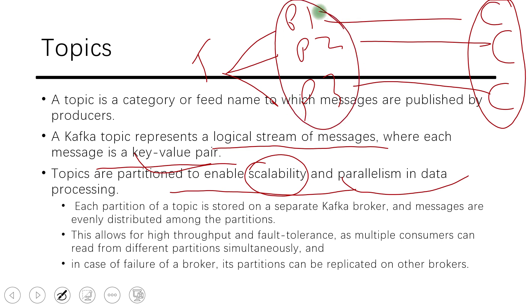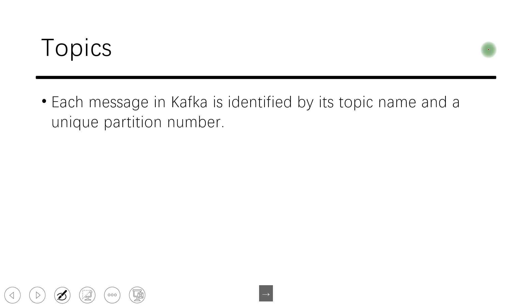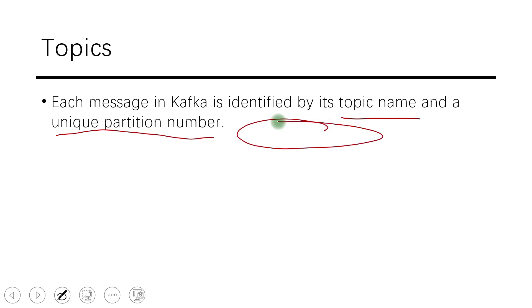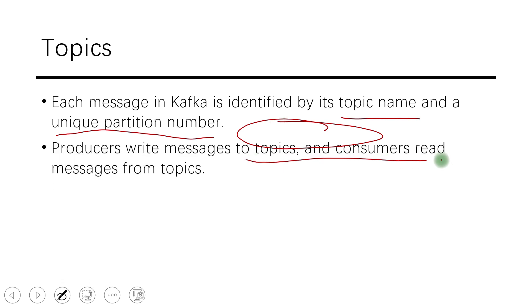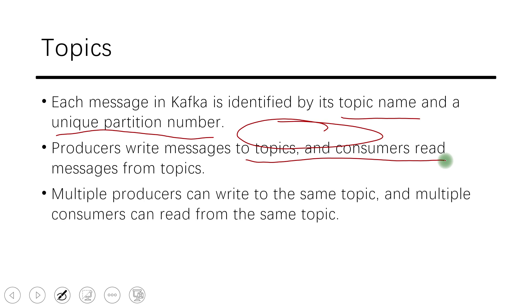The level of parallelism depends on the number of partitions. If there are more consumers than partitions, the extra consumers will sit idle. If there are only two consumers for three partitions, two partitions will be assigned to one consumer. Each message in Kafka is identified by its topic name, unique partition number, and offset. That combination forms the global unique identifier of a message. Producers write messages to topics and consumers read from topics — multiple producers can write to the same topic and multiple consumers can read from it.